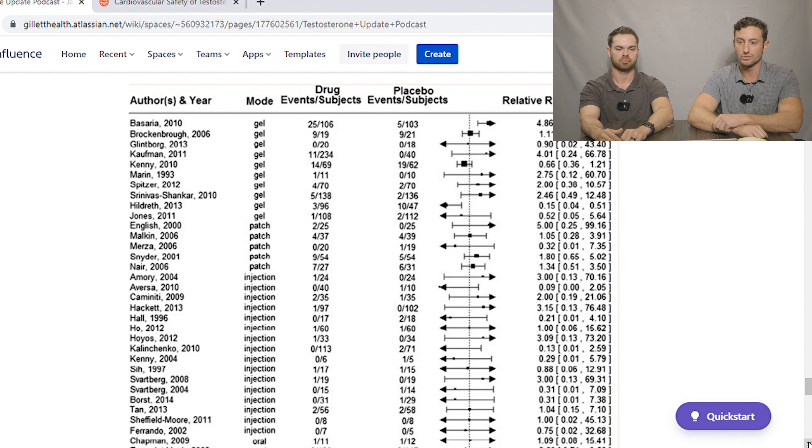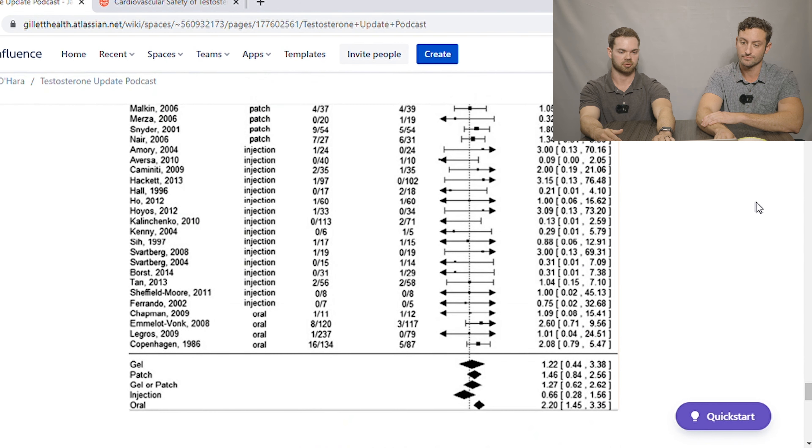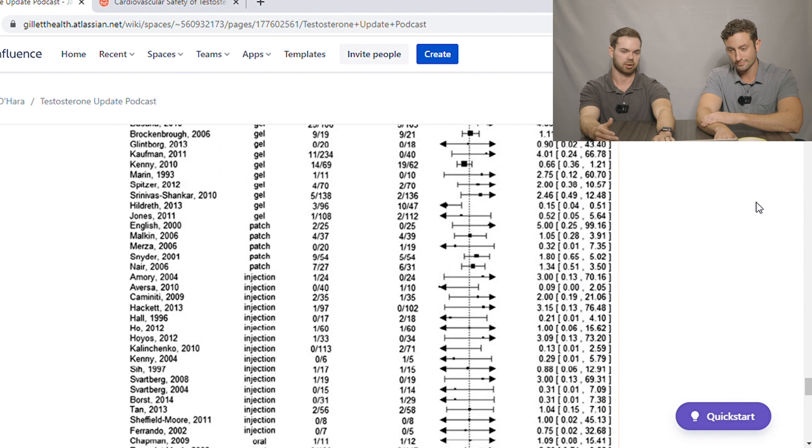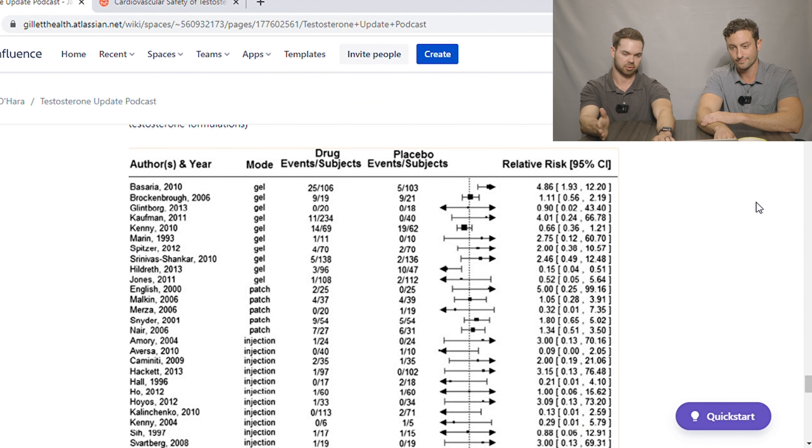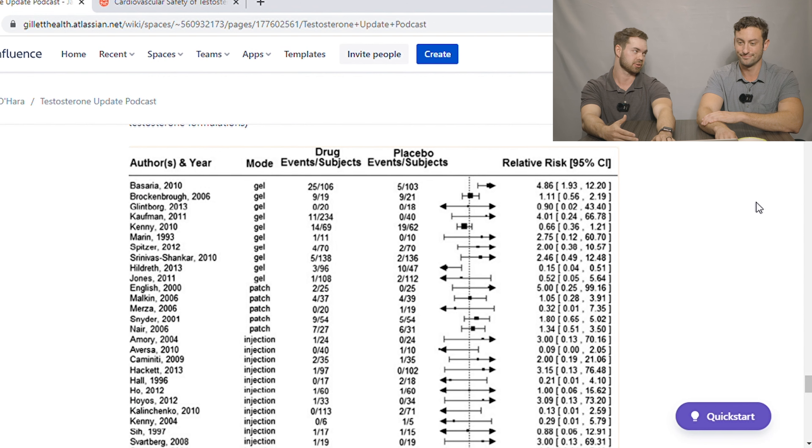And this was interesting to look at because they picked a whole bunch of studies and then looked at what the relative risk for different effects was. And it was all over the place. I mean, this was for cardiovascular outcomes specifically. And if you're looking at the hazard ratios, very wide confidence intervals, some of these relative risks are as high as like a 500% increased risk. Some of them look like an 80% decreased risk for testosterone.